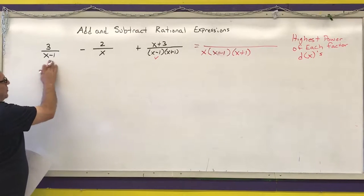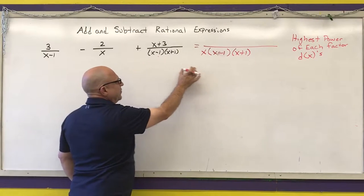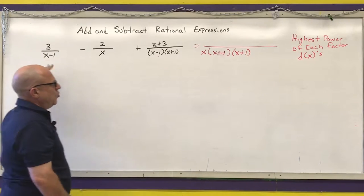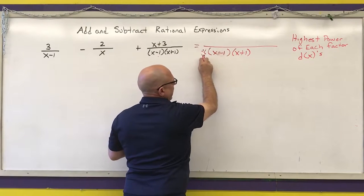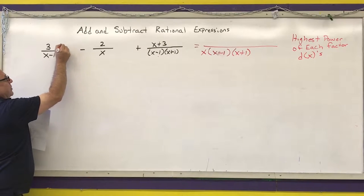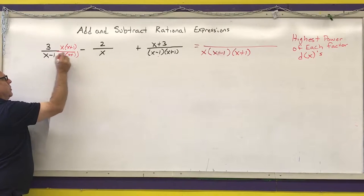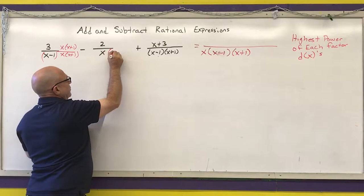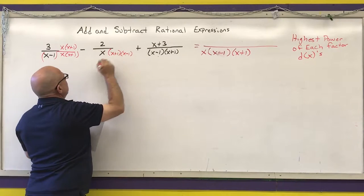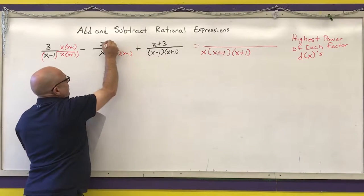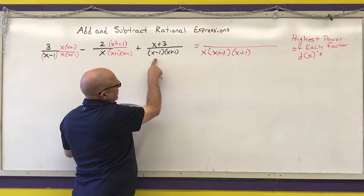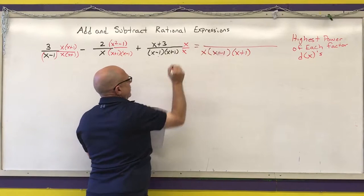Now I need to multiply each rational expression by whatever is needed to reach the LCD. I look at what's missing. For the first term with (x minus 1), I need to multiply by x times (x plus 1) over x times (x plus 1). For the second term with x, I need to multiply by (x plus 1)(x minus 1), which gives x squared minus 1 on top. For the third term, I'm missing x, so I multiply numerator and denominator by x.